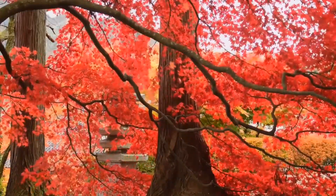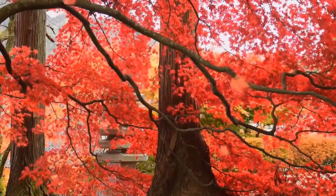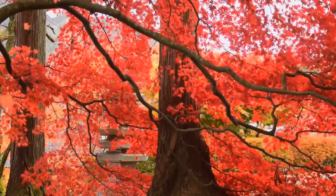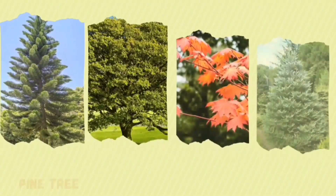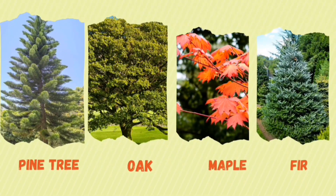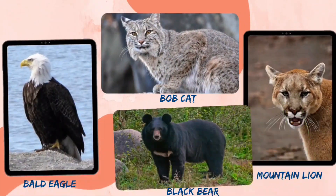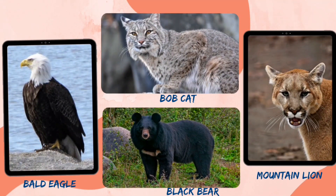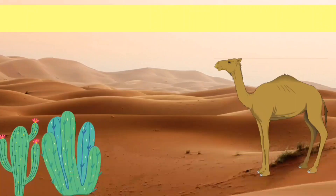Few examples of organisms found in temperate forests are pine, oak, maple, fir, bald eagle, bobcat, mountain lion, and black bear.